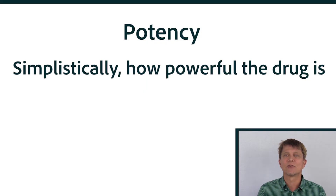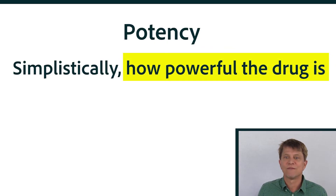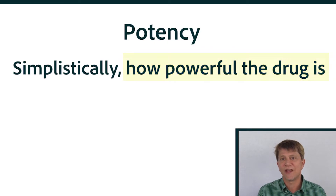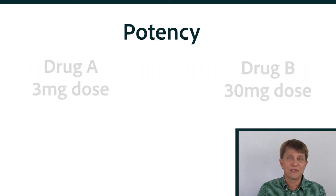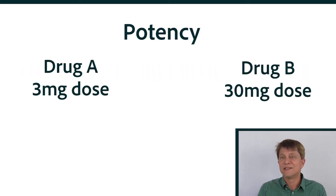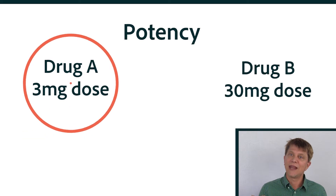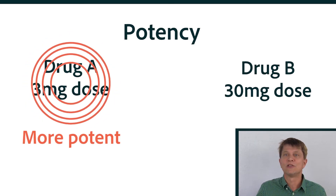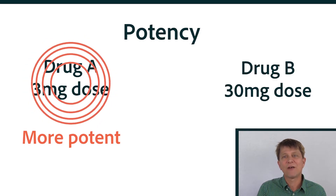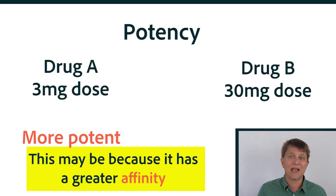Potency is described as the measure of a drug's activity in terms of the amount needed to produce a certain effect. So if two drugs do exactly the same thing and one needs only three milligrams while the other needs 30 milligrams, the one with the three-milligram dose has the stronger potency. This may have a lot to do with the binding of the medication to its receptor.